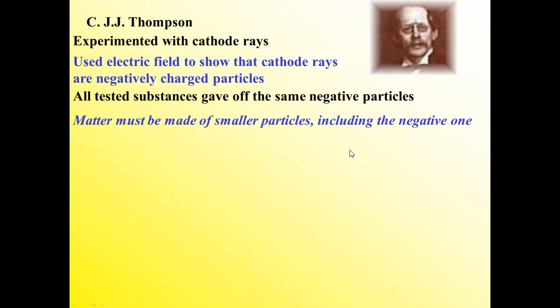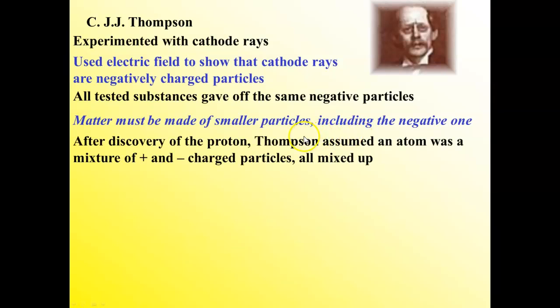He tested different types of metals, and he always got the same types of negative particles. No matter what element he used, he always got these particles. So to explain this, Thompson believed that matter must be made up of pieces. It's not a solid ball. And one of the pieces has to be negatively charged. After discovery of the proton, Thompson assumed an atom is a mixture of positive and negatively charged particles all mixed up. This was referred to as the plum pudding model.